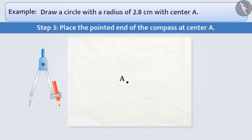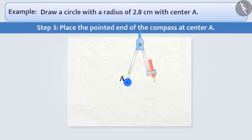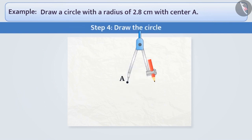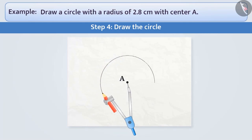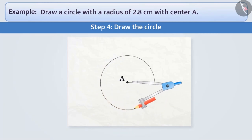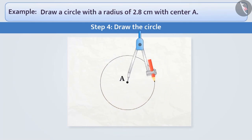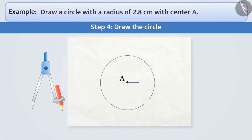Step 3: We will place the pointed end of the compass at the centre A. Step 4: We will keep the pointed end of the compass fixed at the centre and rotate the tip of the pencil slowly and complete one round. From this, we get a circle with centre A and radius 2.8 cm.